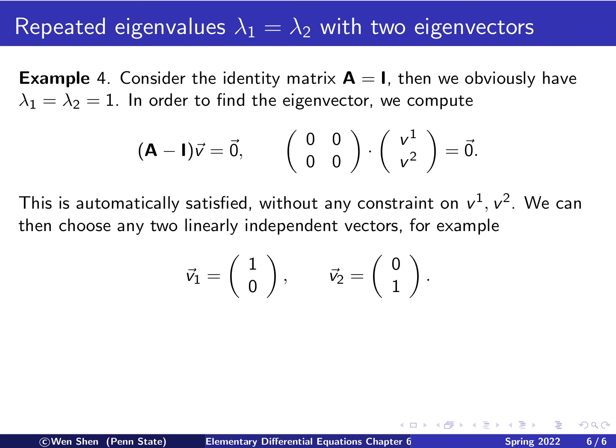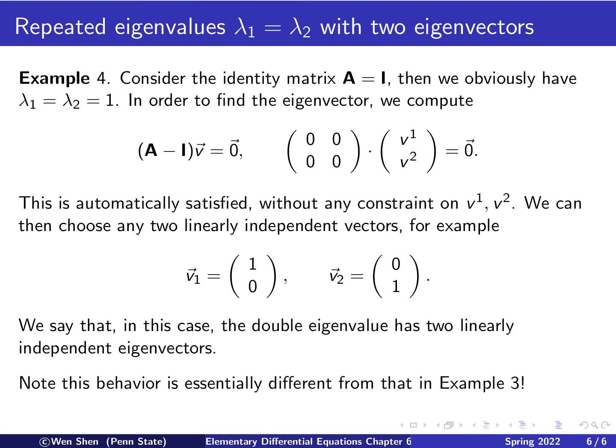And in fact you can choose any others. Therefore, you can find two eigenvectors. So in this case, we say that the double eigenvalue has two linearly independent eigenvectors. So I just want to remark on that this behavior is essentially different from the example 3, where you have just one eigenvector. This concludes our review on eigenvalues and eigenvectors. And next time we will start looking at systems of linear ODEs. I hope you enjoyed this video and I'll see you next time.